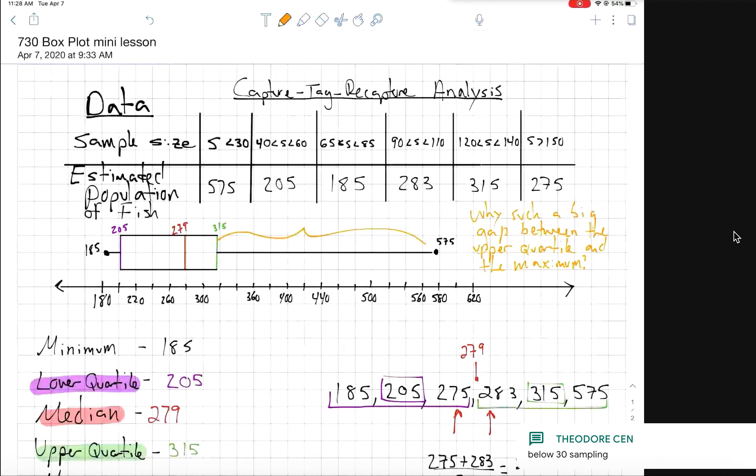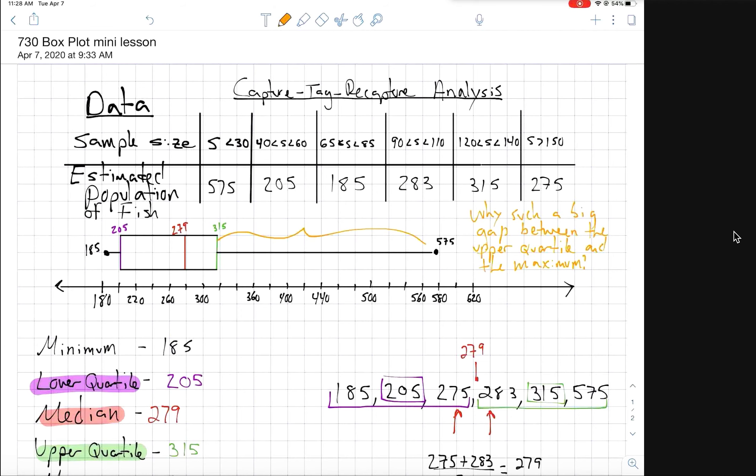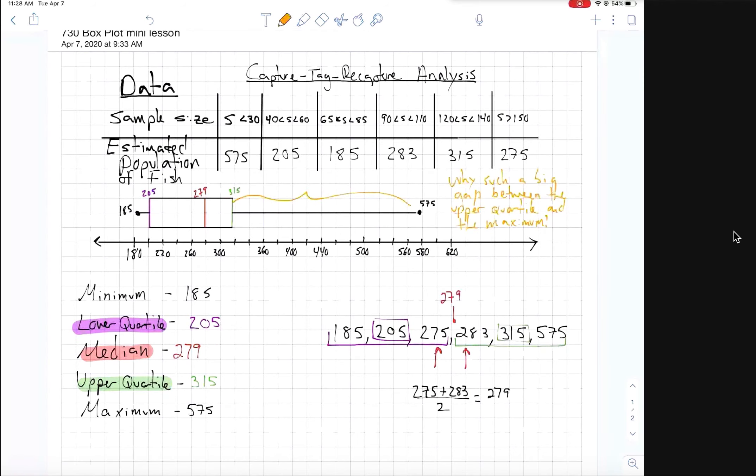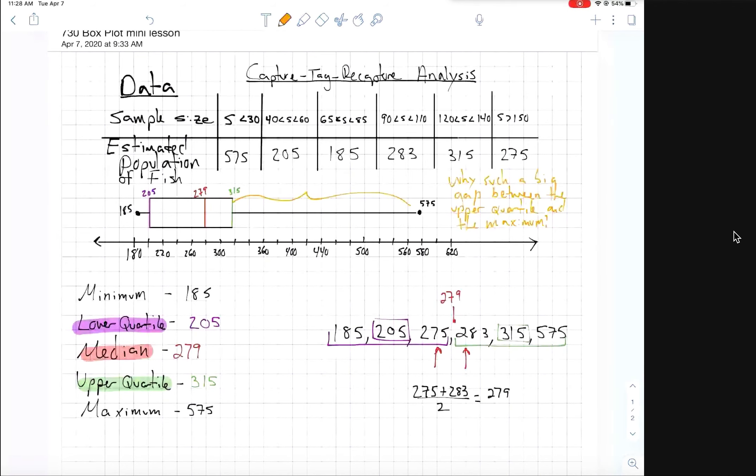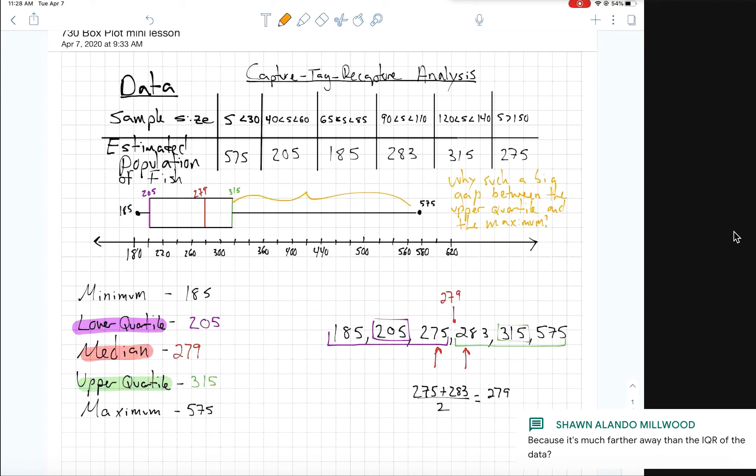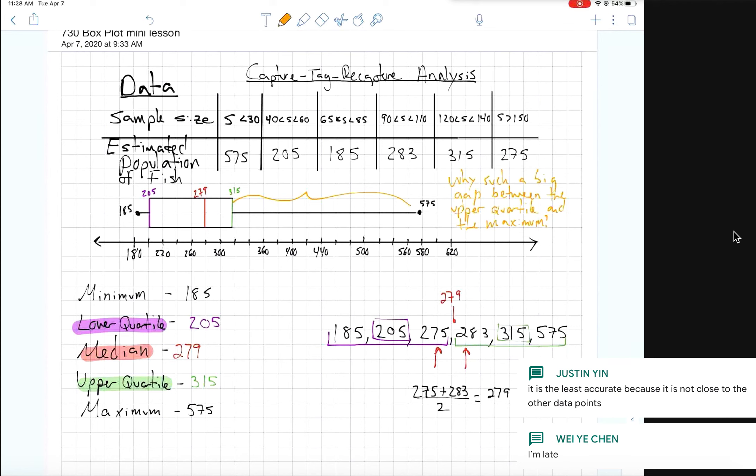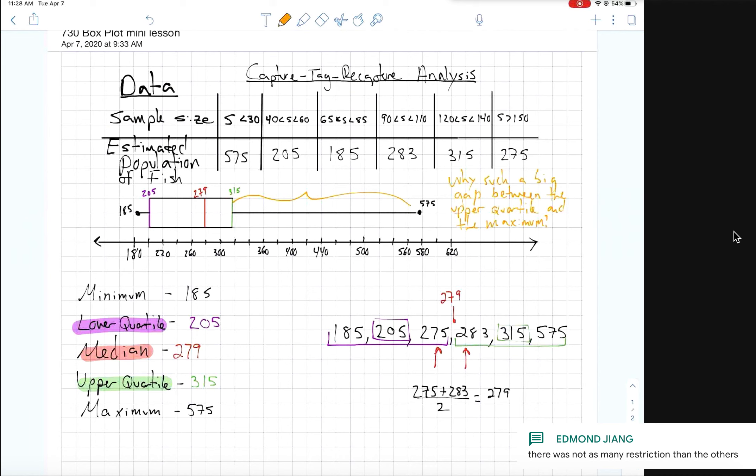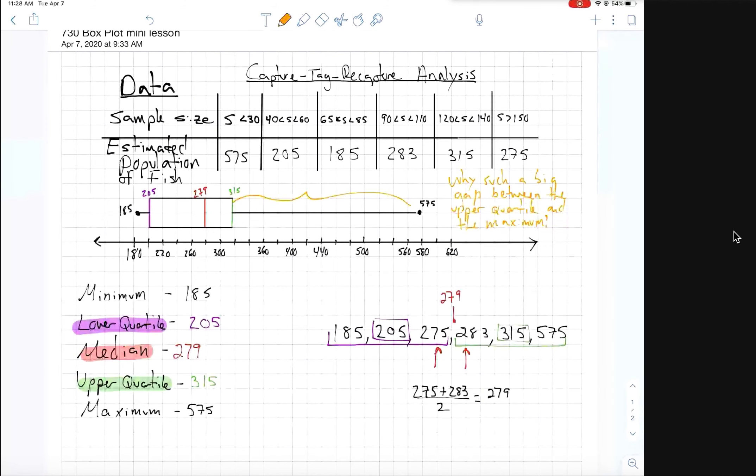Does anyone have a reason why that might have happened? Data super varied from the least accurate data. Can someone else besides Theodore add on to what he means by 575 is the least accurate data? So I want someone else besides Theodore to try to add on to what he means by the 575. So Sean, why is it far away? That's the next question. So yeah, we see it's far away from the IQR and from the median and the upper quartile. Why did that happen though, Justin? Why did it end up that way?